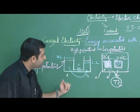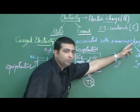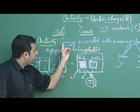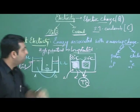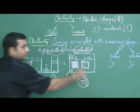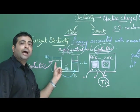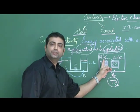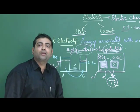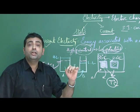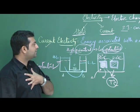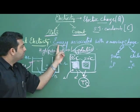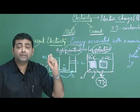Likewise, for a charge to move, there must be some energy associated. But for this charge to move, there should be a difference in potential. For water flow we call it hydrostatic potential difference; for heat flow we call it thermal potential difference; and in the case of electricity, we call it electric potential difference.